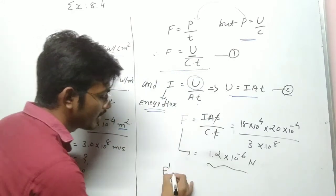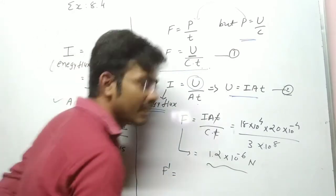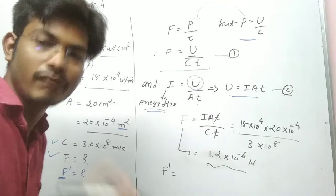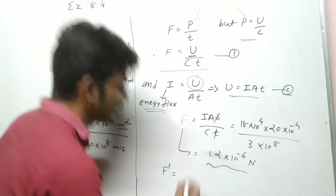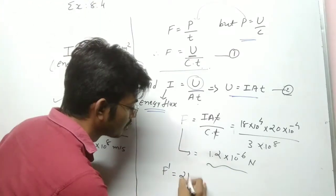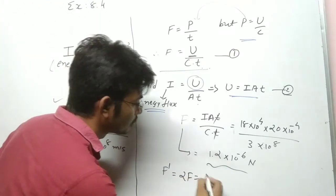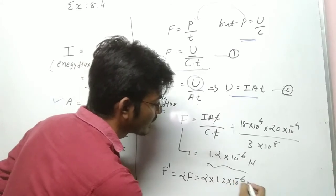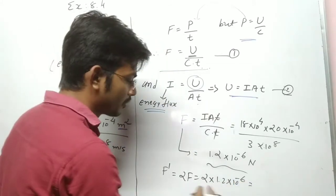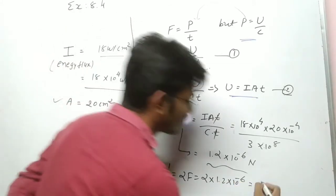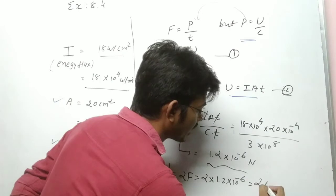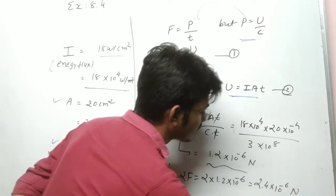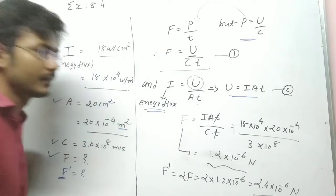Now we also have to find F dash — assuming the surface is totally reflective. In that case, F dash = 2F. So F dash = 2 × 1.2 × 10⁻⁶ = 2.4 × 10⁻⁶ Newton. That is our answer for the second case.